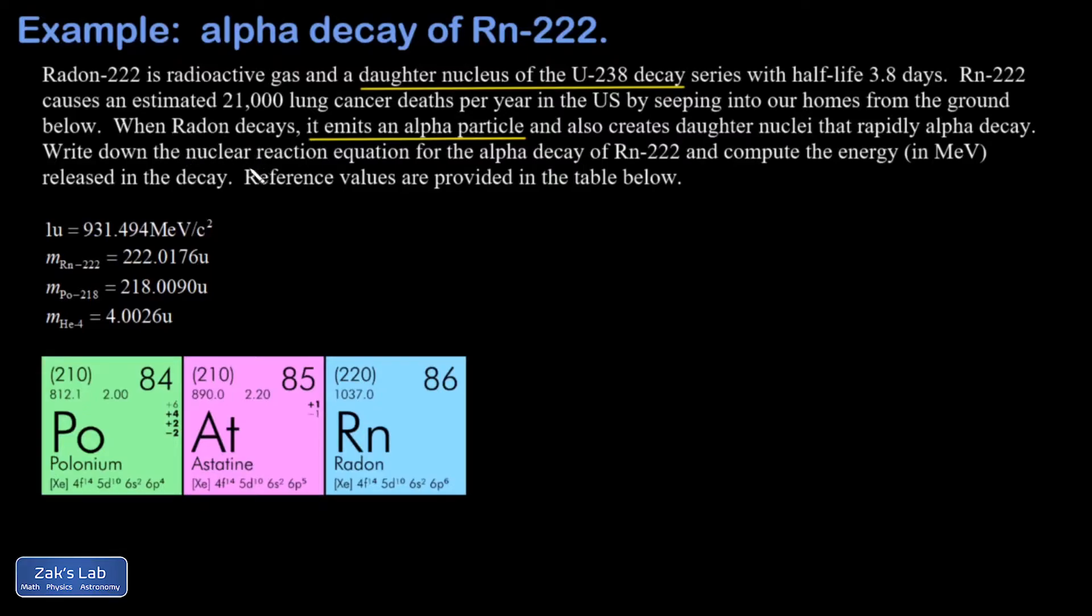We're asked to write down the nuclear reaction equation for the alpha decay of radon-222 and compute the energy in MeV that's released in the decay. We have a reference table here with the atomic mass unit written in MeV per c squared.